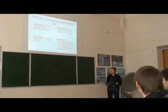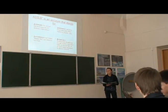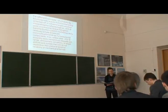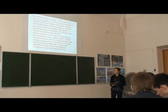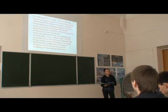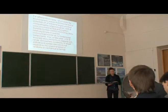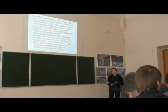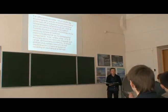ADS-B is an Automatic Dependent Surveillance Broadcast, and this system is going to replace microwave spectrum surveillance radar. This system works differently from radar, which works by bouncing radio waves from fixed terrestrial antennas and then interpreting reflective signals. ADS-B uses conventional GNSS technology and is related to simple broadcast communication means.